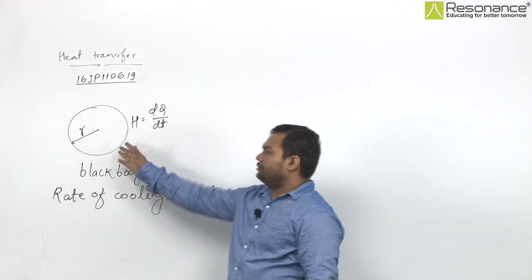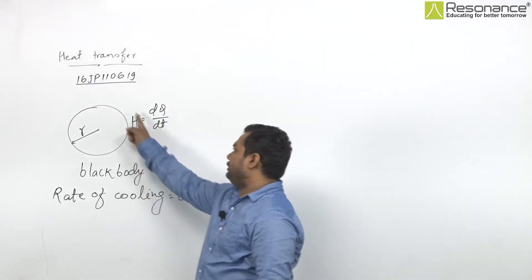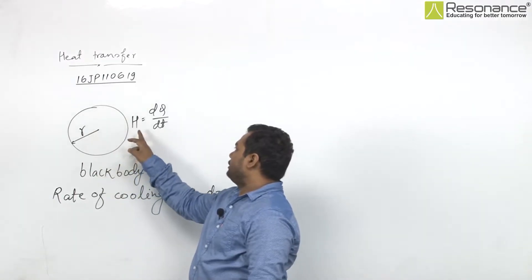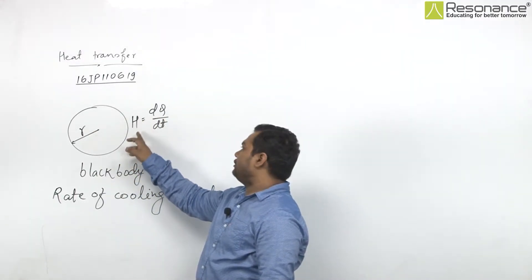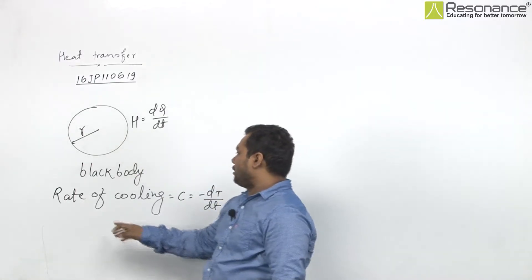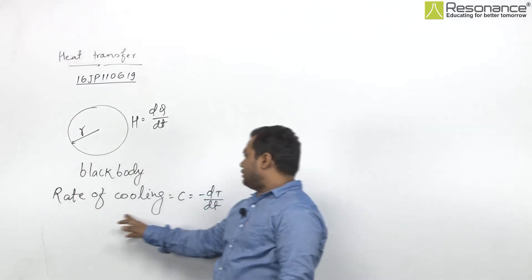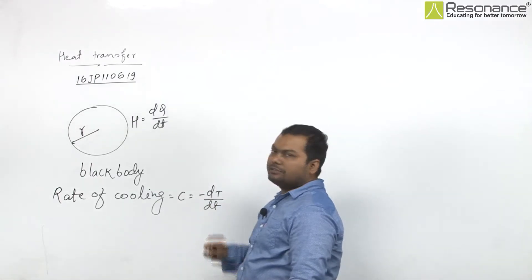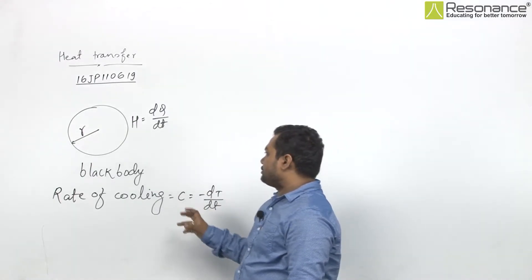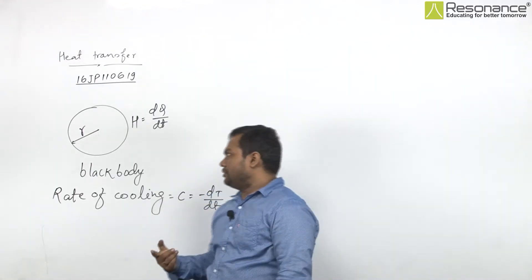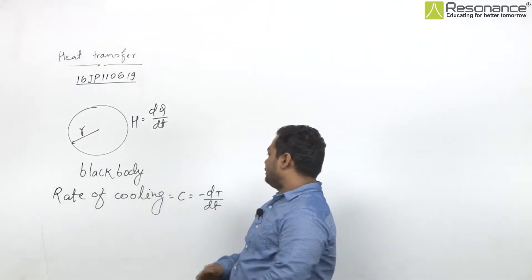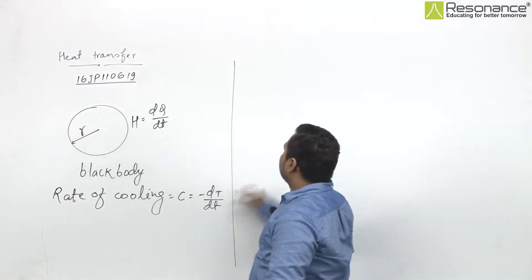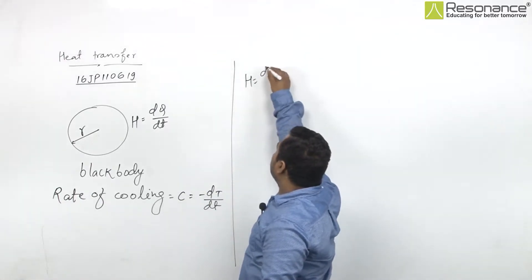In this question, this is a black body of radius R. Its rate of flow of heat, which is called power, is given as H. It is given as rate of cooling variable, which is C. And it is asking to find the relation between H and R, and C and R.